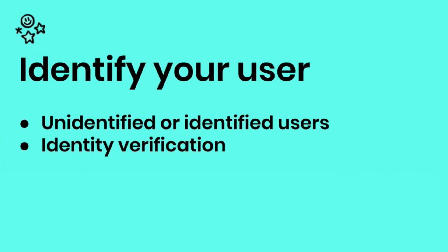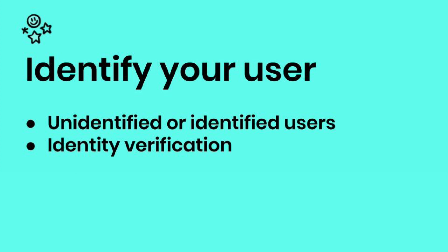Once you've initialized the SDK, you should identify your user to Intercom. If your users are logged out, you can register an unidentified user. If they're logged in, you can register an identified user. When you register them, you can provide things like a unique ID, email, name, and other attributes, and you can update those later as well if you need to.